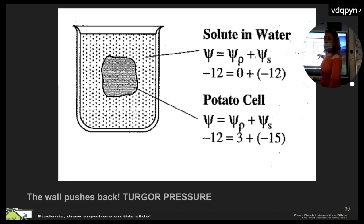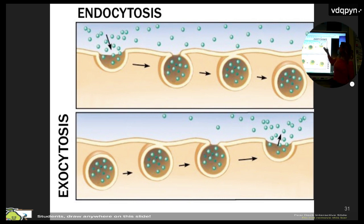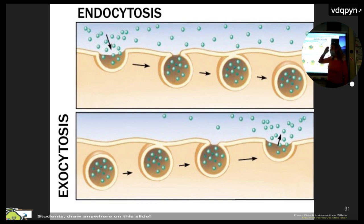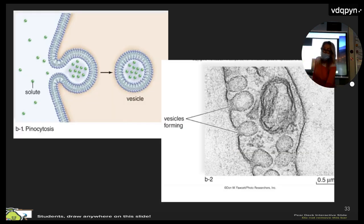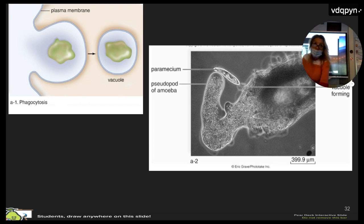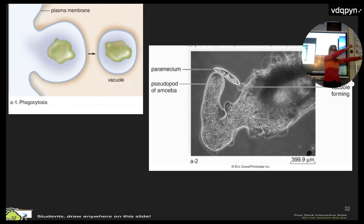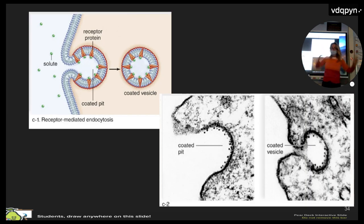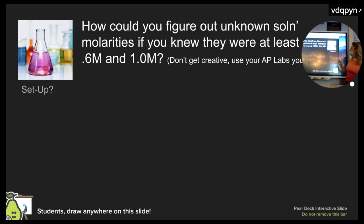On endocytosis and exocytosis: there are three types of endocytosis. Pinocytosis is cell drinking. Phagocytosis is cell eating — like a dendritic cell eating a bacterial cell. The third type is receptor-mediated endocytosis, where the cell finds receptor after receptor and then performs endocytosis.